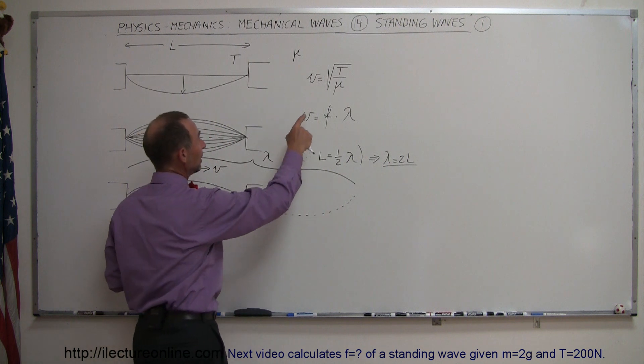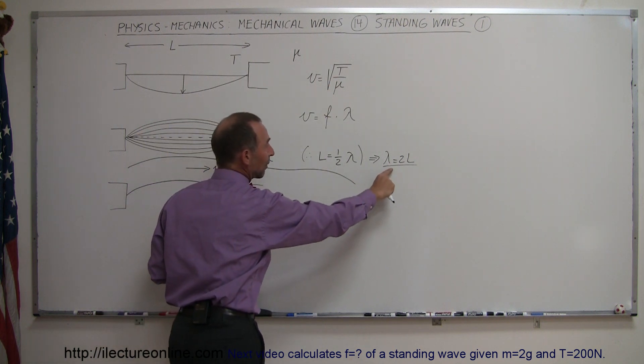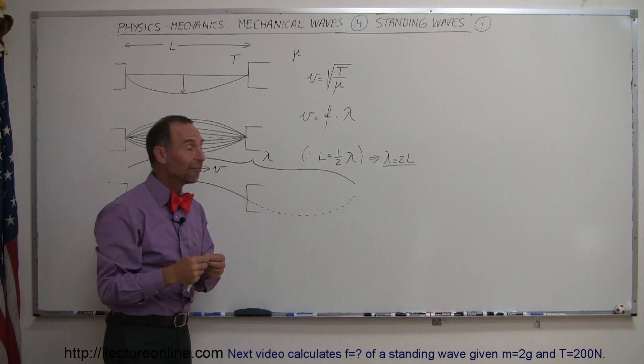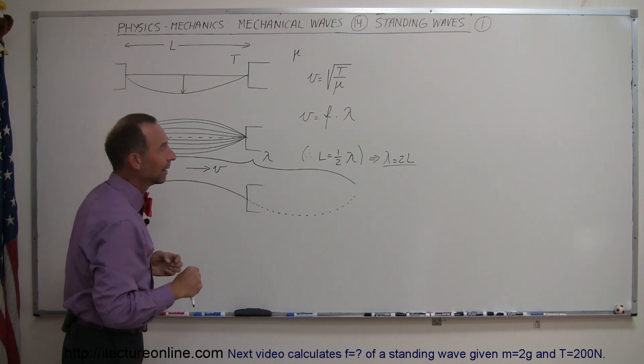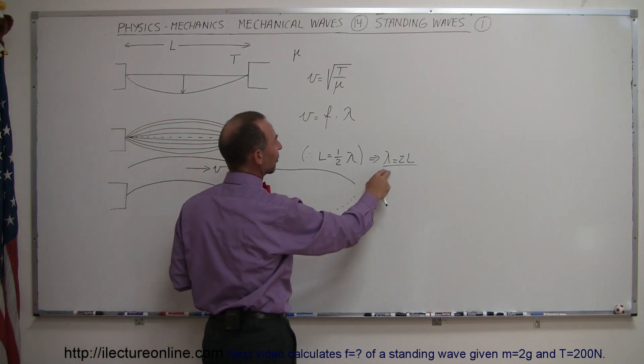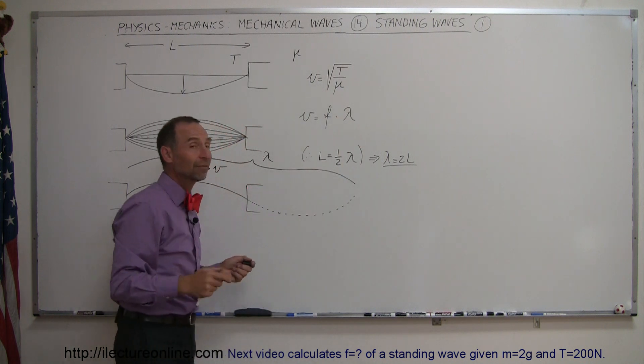So since we know the velocity determined by the tension and the mass per unit length, since we now have dictated the wavelength by pulling on the string at a particular location so that it vibrates like that, then we can figure out the frequency, which is this velocity divided by the wavelength we've given the string.